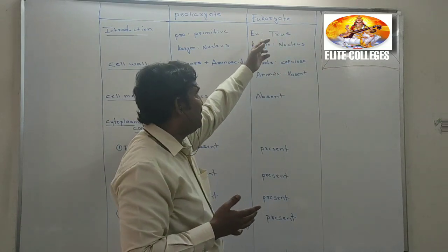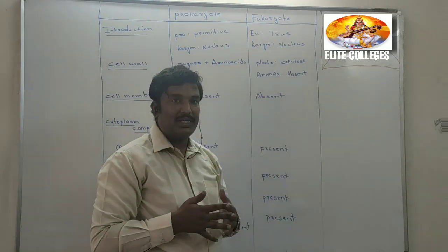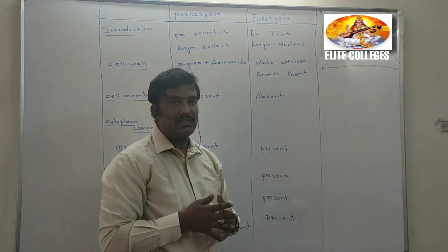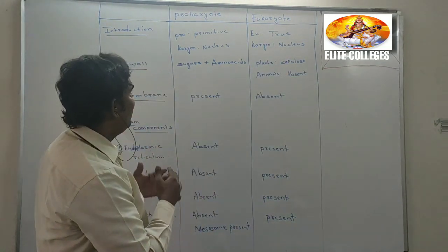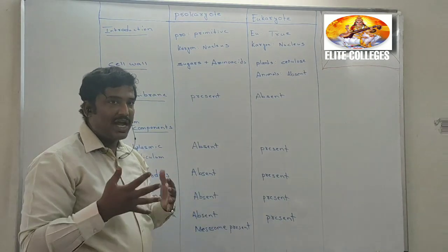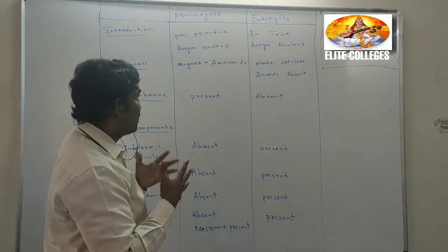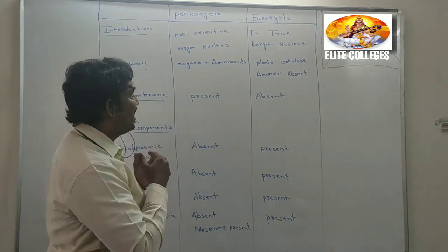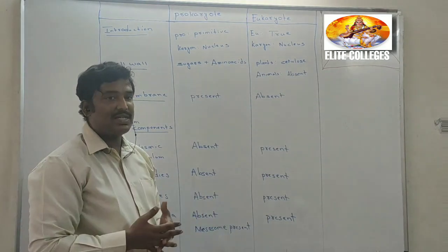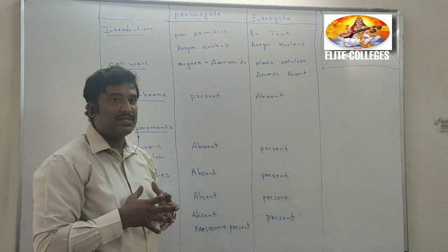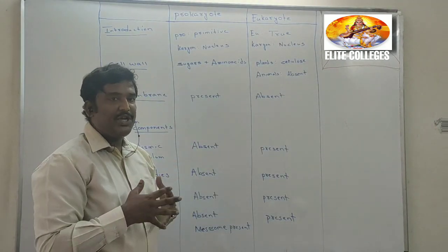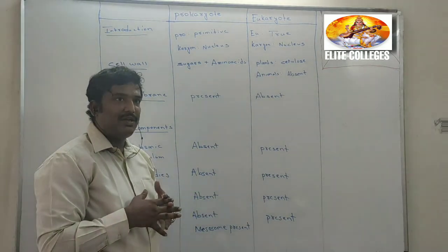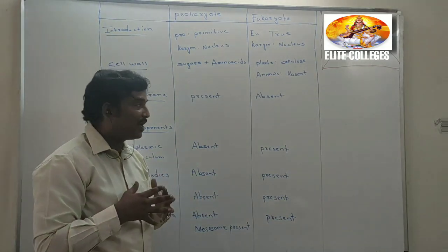In eukaryotes, the term 'eu' means true. The cell with a true nucleus is called a eukaryote. So prokaryote means the cell with a primitive nucleus, whereas eukaryote means the cell with a well-defined nucleus. We are going to study what components make it a well-defined nucleus.